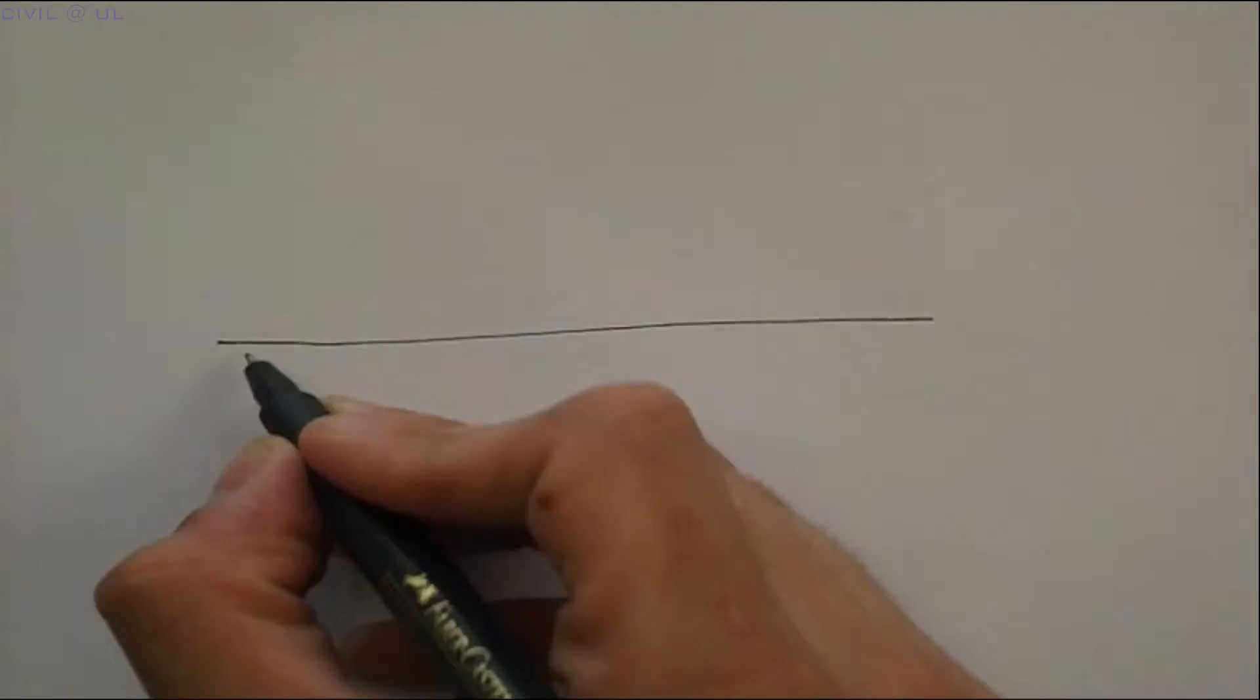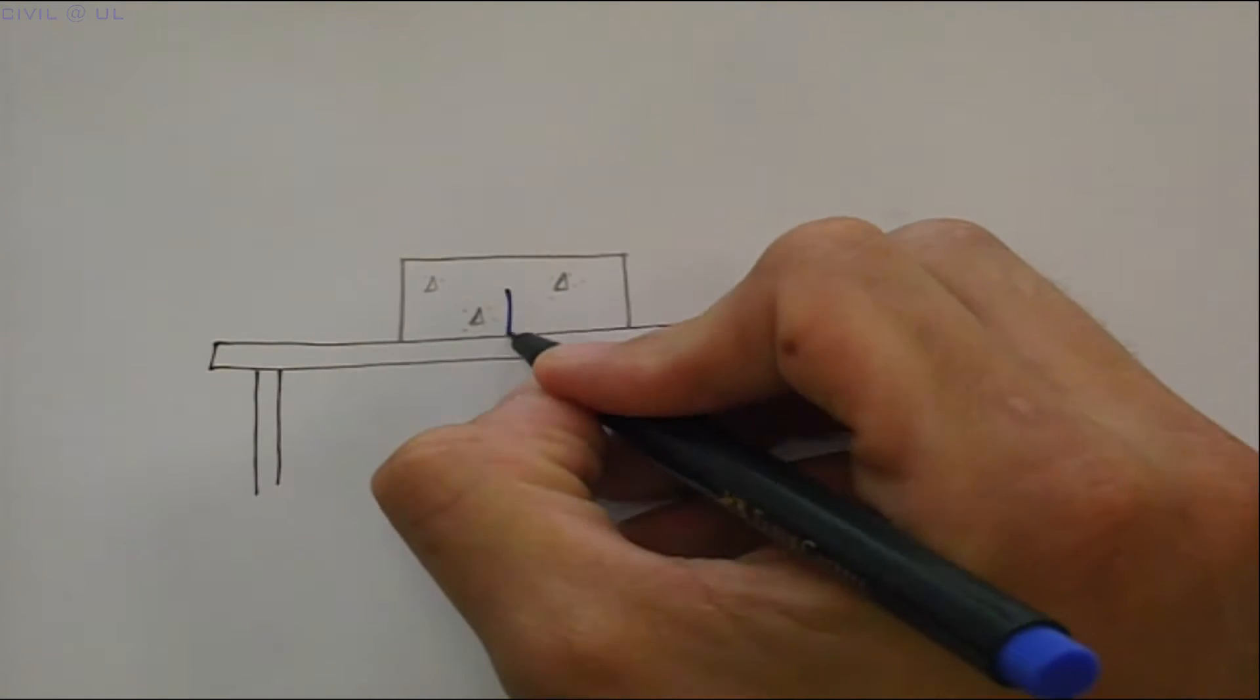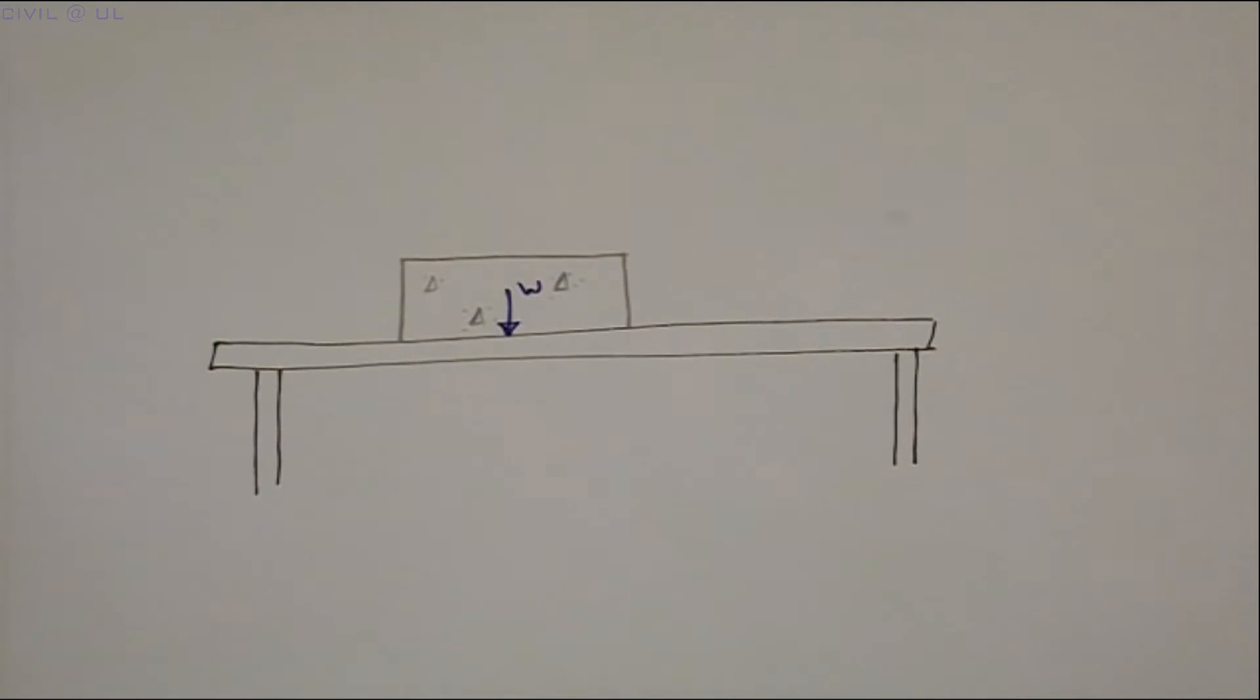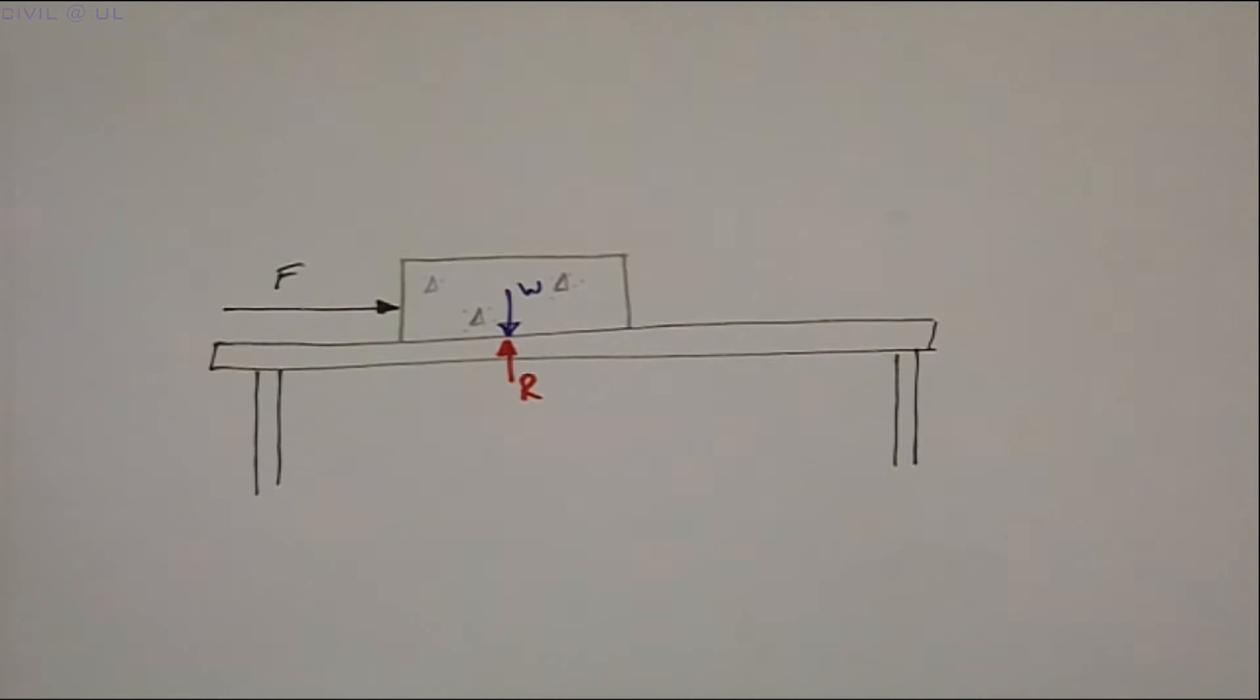Let's start with the analogy of a concrete block resting on a table. The block's weight, W, applies a normal force to the table and the table responds by offering an equal and opposite reaction, R. Imagine now, if we were to try and slide the block across the table, by pushing it from the side.